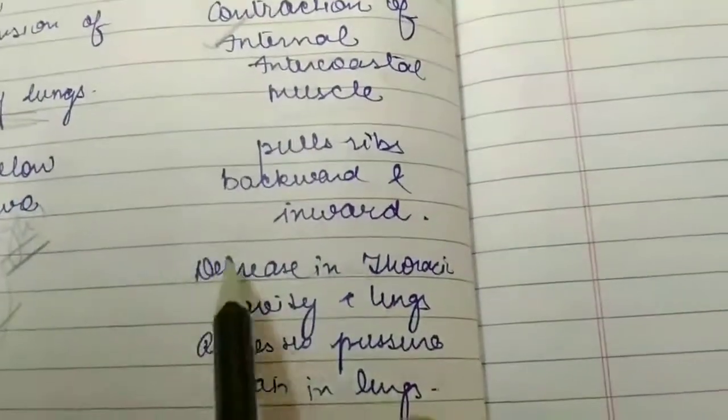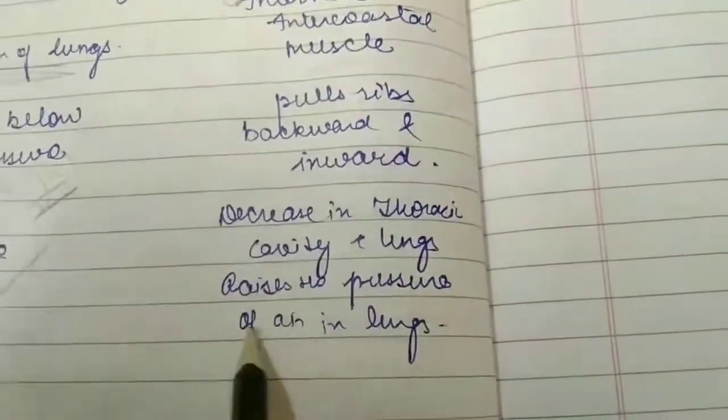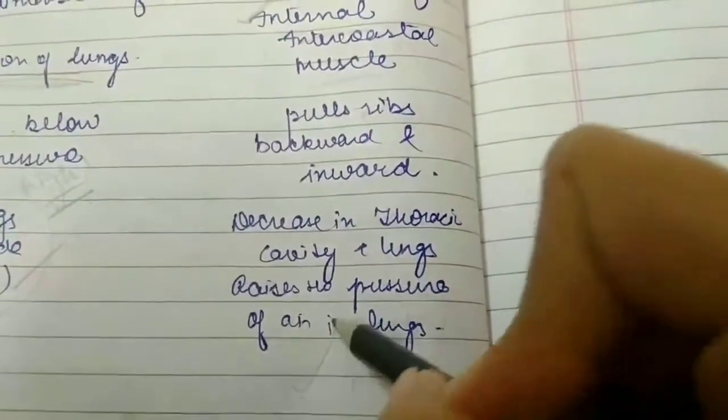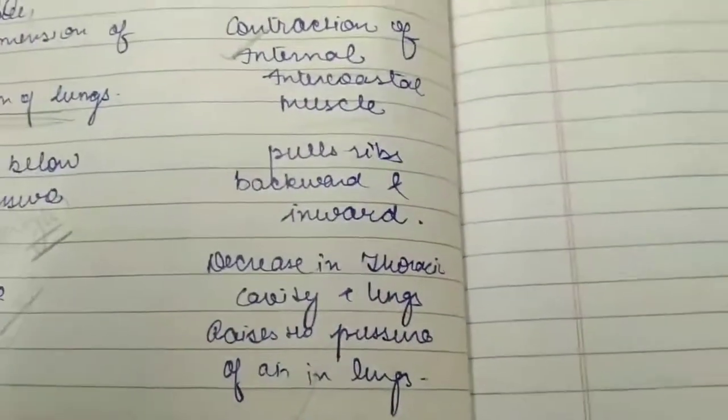Contraction of internal intercostal muscles will decrease the thoracic cavity and lungs. This increases the pressure of air in the lungs, and the air pressure increases in the lungs.